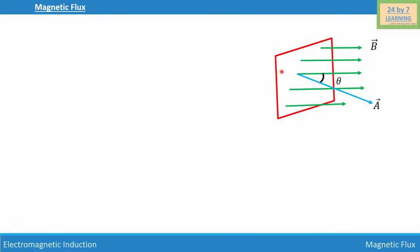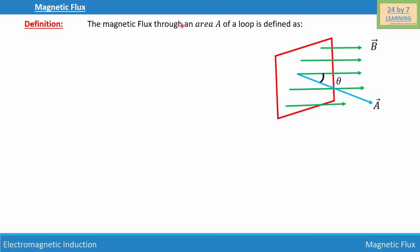Magnetic flux. Let us consider a loop placed in a uniform magnetic field B, where the area of cross section of the loop is A, which makes an angle of theta degrees with the uniform magnetic field B. The magnetic flux through an area A of a loop is defined as phi B, equal to the dot product of magnetic field B and area of cross section A.